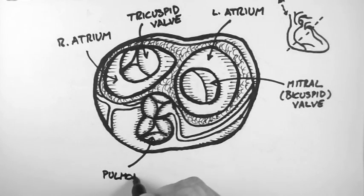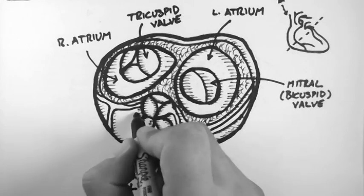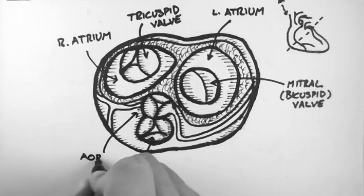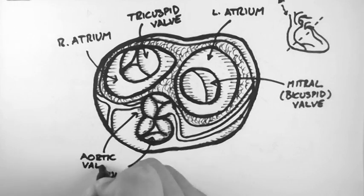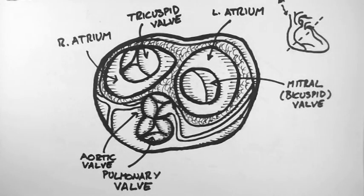Now down here we have the pulmonary valve and it lies between the right ventricle and the pulmonary trunk. And then just above it here we have the aortic valve which lies between the left ventricle and the aorta.